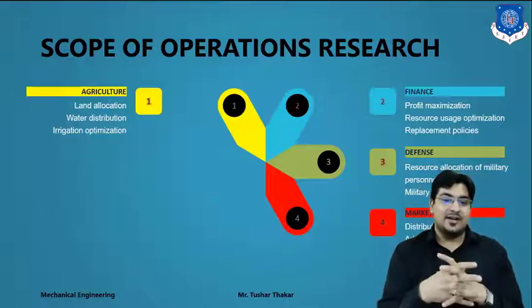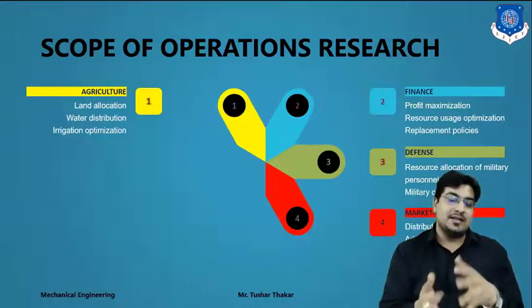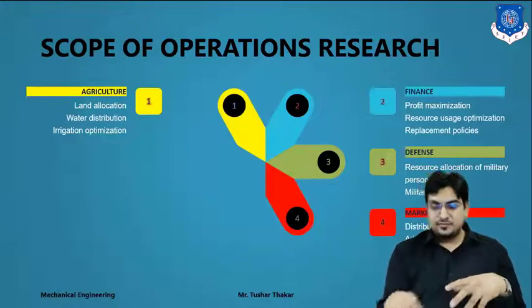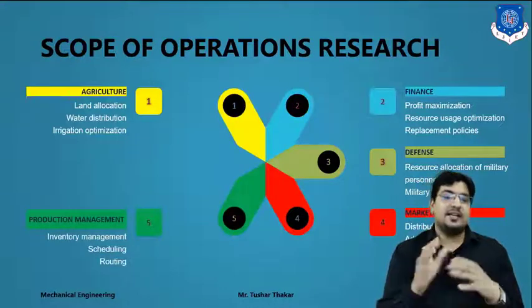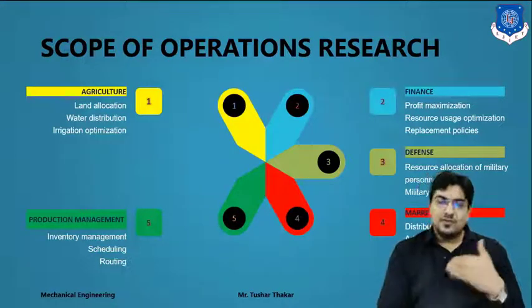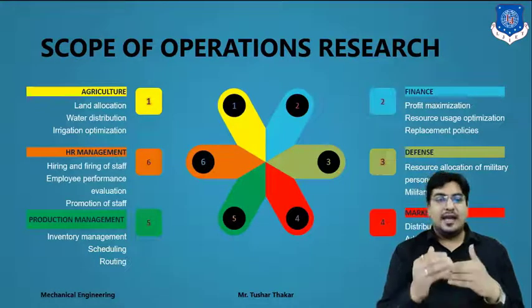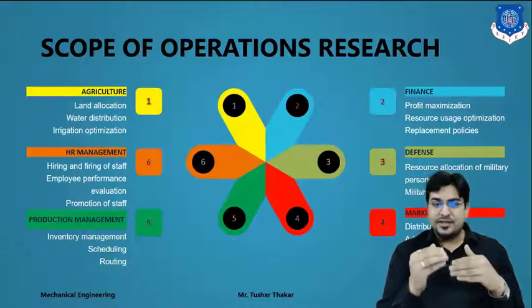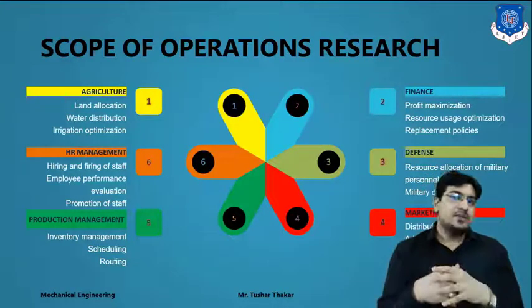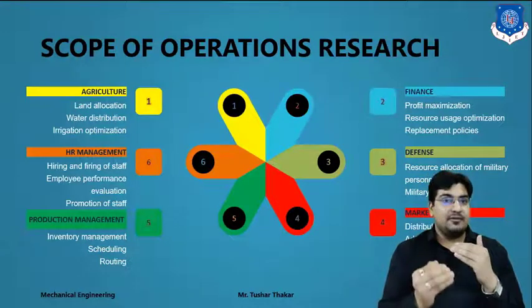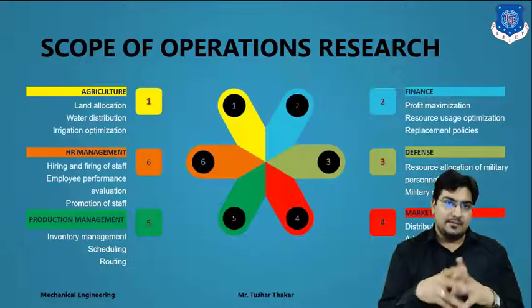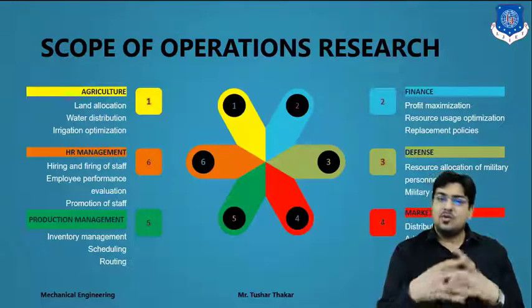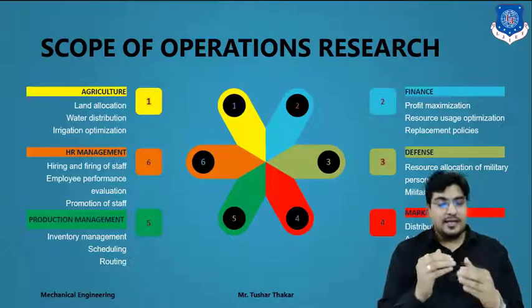The fourth scope is marketing — distribution, advertising, and identifying which type of marketing increases production demand or company reputation. Fifth is production management — scheduling, routing, and queuing, which we will cover in upcoming lectures. Sixth is HR management — hiring and firing of staff, employee performance evaluation. Companies use OR to find the optimal number of employees needed, and expand hiring only when the business grows.